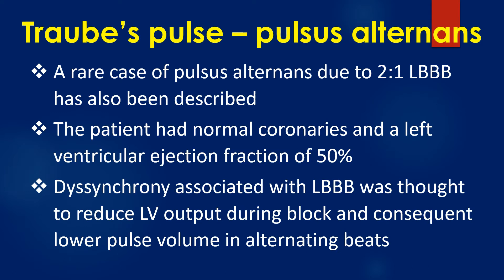A rare case of pulse alternance due to 2-to-1 left bundle branch block has also been described. The patient had normal coronaries and left ventricular ejection fraction of 50%. Dyssynchrony associated with LBBB was thought to reduce left ventricular output during block and consequent lower pulse volume in alternating beats.